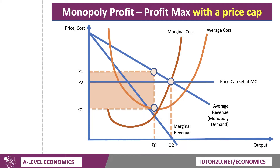Can the firm still make a profit at that price and output? Well, the answer is yes. At Q2, there's the unit cost C2. So charging P2 with unit cost C2, the profit is the green area. The orange area was the previous profit; the green area is the new profit. We can see that profit has come down because the firm is now capped in what it can charge. So that would be a reasonably good price cap diagram to draw for the exam.